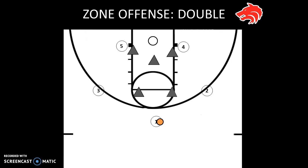Double is a play that can be run to either side — it just depends on which wing one passes to first. In the video it's only going to be run to the right side, so one's going to be passing to two. But because this is a balanced offense, it could be run to the other side; the player roles would just have to flip. The first move in Double is that one passes to the wing.